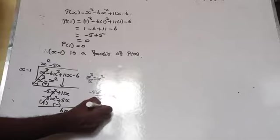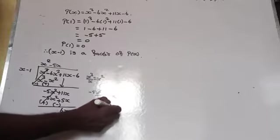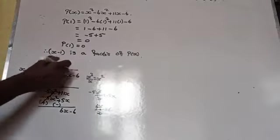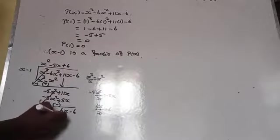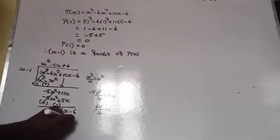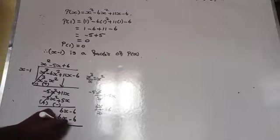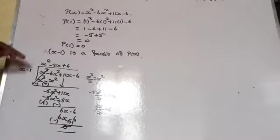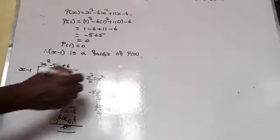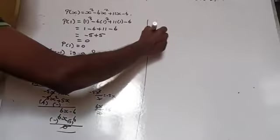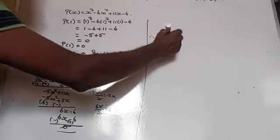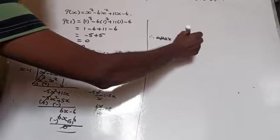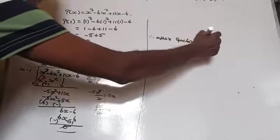6x ÷ x = 6, so +6. Then 6 × (x - 1) = 6x - 6. Change the sign; the remainder is 0. Therefore, the other factor is x² - 5x + 6.